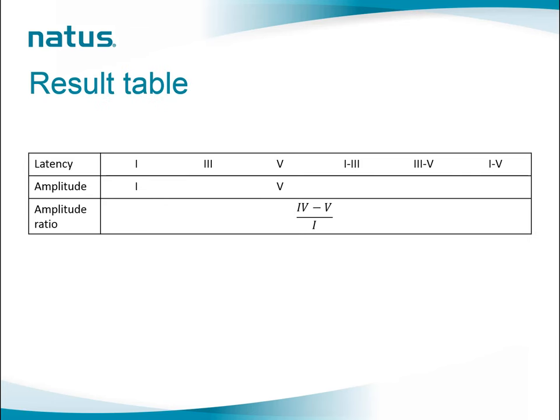Regarding results, we need to mark at least the five first waves. The ACNS recommends marking the latency for peaks 1, 3, and 5, and the latency differences between peaks 1-3, 3-5, and 1-5. Peak 3 should be in the middle — the latency differences 1-3 and 3-5 should be equal, and each should be half of the 1-5 difference. We should also mark the amplitude of waves 1 and 5 and calculate the amplitude ratio between peak 4-5 and peak 1.